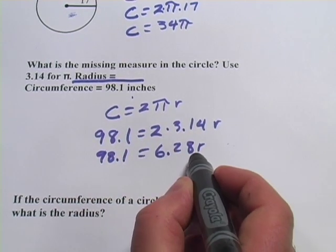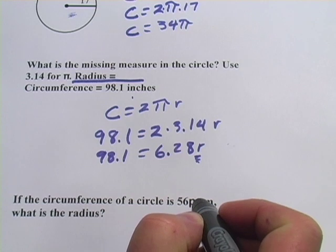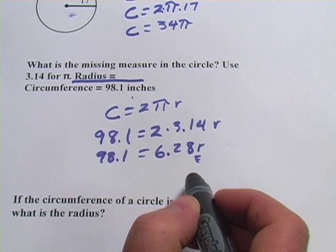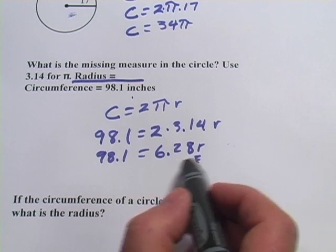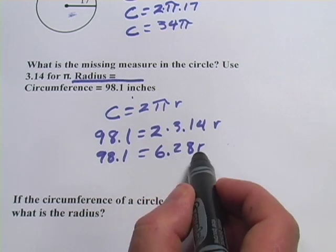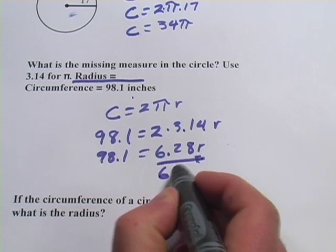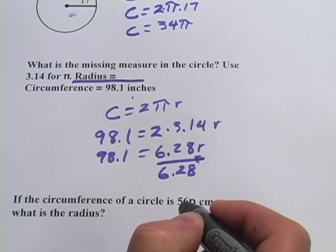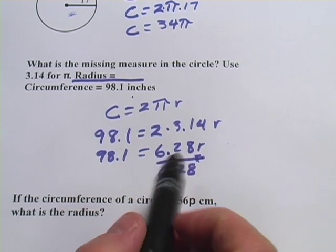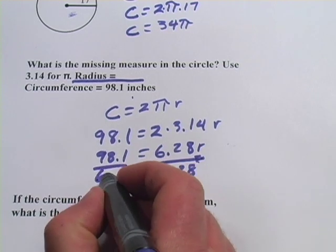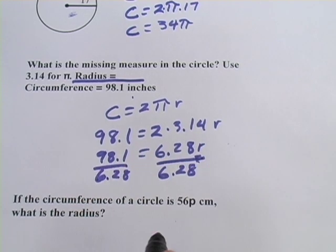Now what we want to do is solve for r, solve for that variable. And when we solve for a variable using algebra, what we'll do is divide by whatever is multiplied by it. 6.28 is multiplied by the r, so we're going to divide that, and it will disappear over here. But the rules of algebra say you have to do the same thing to the other side that you do to this side. So I'm going to divide this side by 6.28 as well.